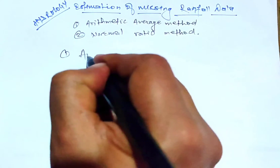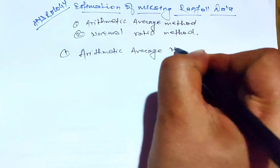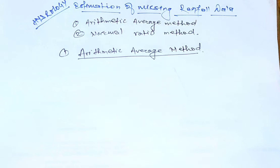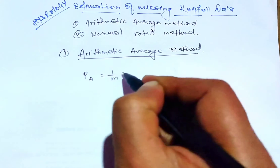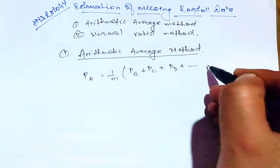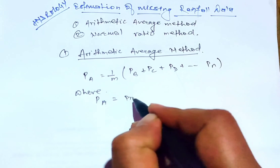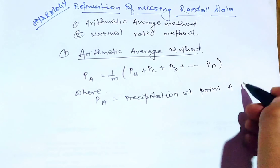Let's start with the arithmetic average method. If the normal annual precipitation at various stations are within 10% of the normal annual precipitation at station A, then the missing rainfall is estimated using the simple arithmetic mean method: P_A equals one divided by M, times the sum of P_B plus P_C plus P_D, and so on up to P_N. Here P_A is the precipitation at point A that needs to be found.